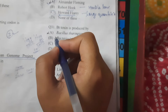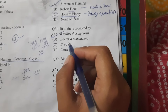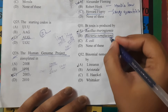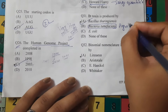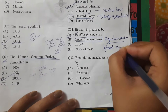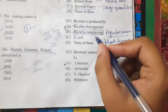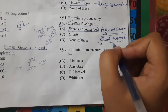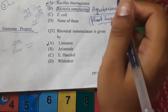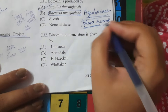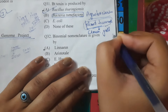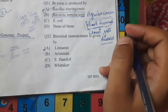BT toxin is produced by Bacillus thuringiensis. Another option in this question is Agrobacterium tumefaciens, which causes plant tumors. The disease caused by Agrobacterium tumefaciens is called crown gall disease. Binomial nomenclature was given by Linnaeus. We have also studied 1, 2, 3, 4, and 5 kingdom classifications by different scientists — keep in mind which scientist corresponds to which classification.